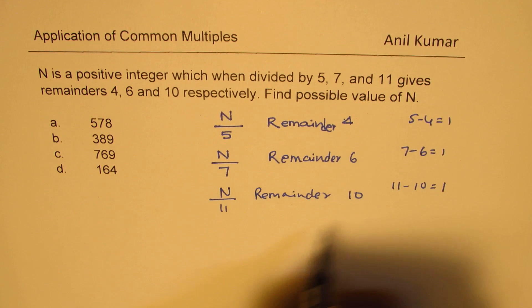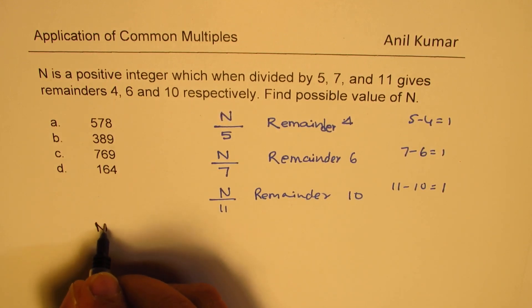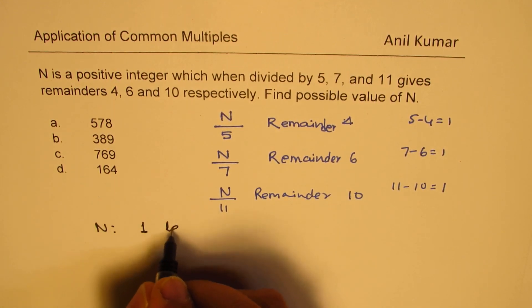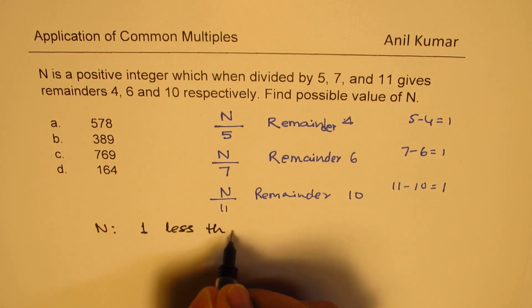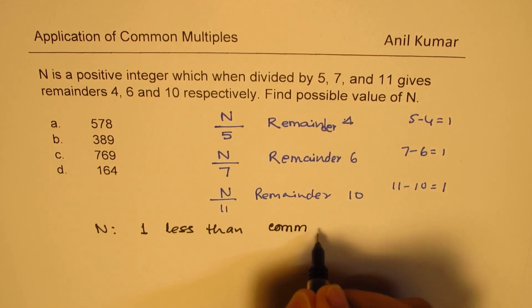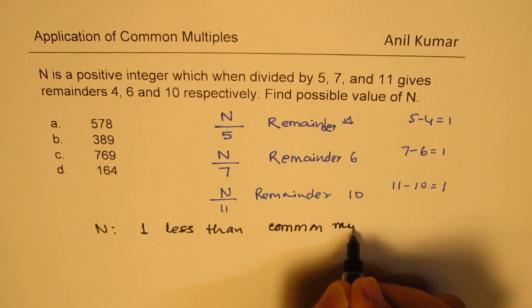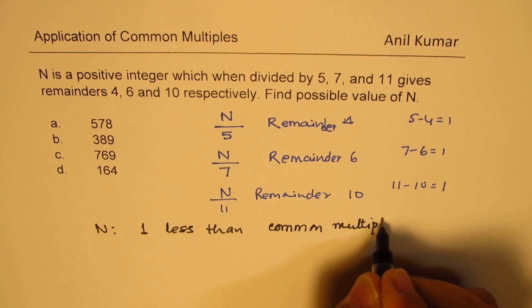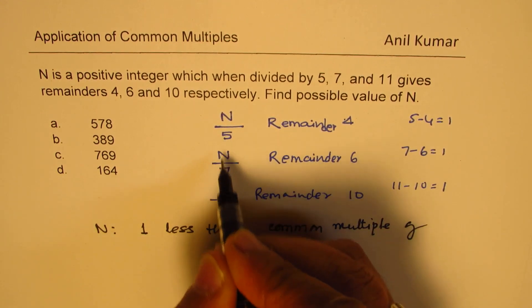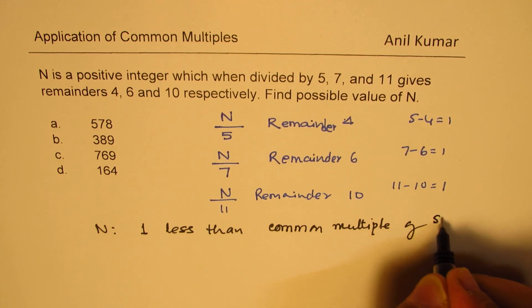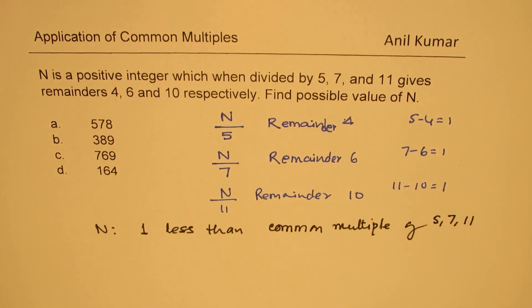So that means the number N is 1 less than common multiple of these divisors, which are 5, 7, and 11. Do you get the idea?